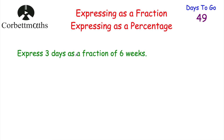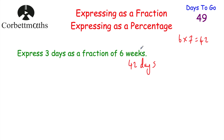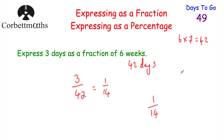Our next question says express 3 days as a fraction of 6 weeks. Feel free to press pause now to work out this question. We need to convert weeks into days — there are 7 days in a week, so 6 multiplied by 7 equals 42, meaning 6 weeks is 42 days. So we express 3 days as a fraction of 42 days: that's 3 over 42. Both are divisible by 3: 3 divided by 3 is 1, and 42 divided by 3 is 14. So the answer is 1/14th. If you got that, well done.